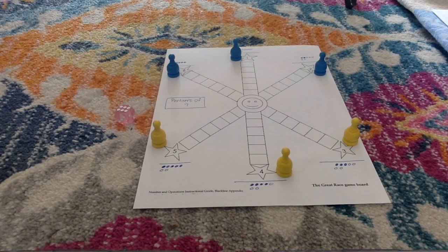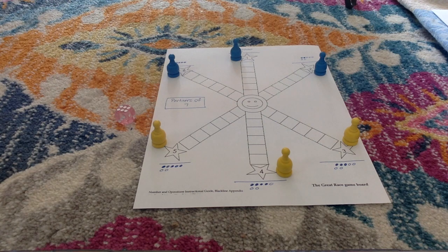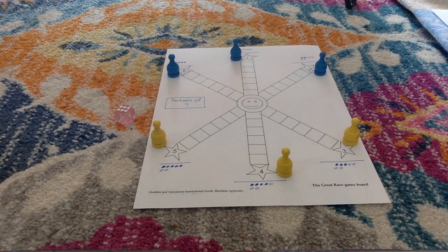Each player chooses three numbers on the game board and puts his or her pawn next to those numbers. The goal is to race to the middle where the smiley face is.